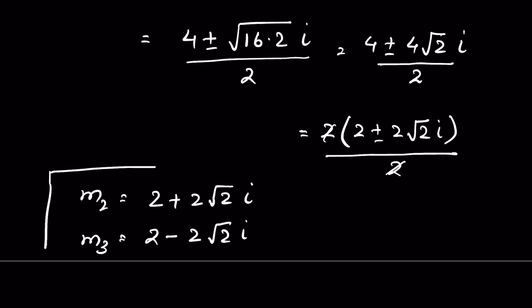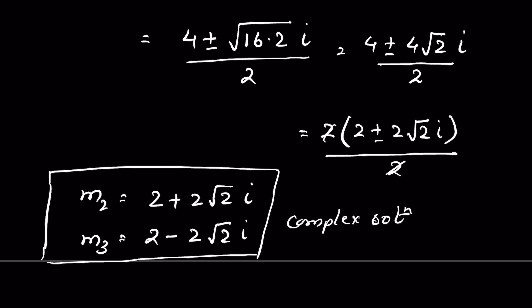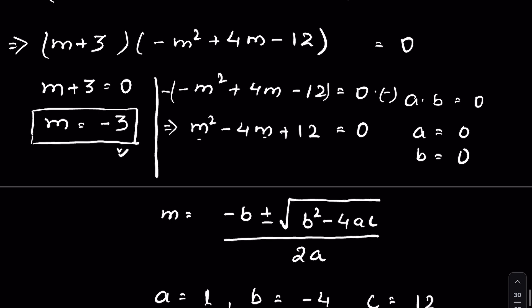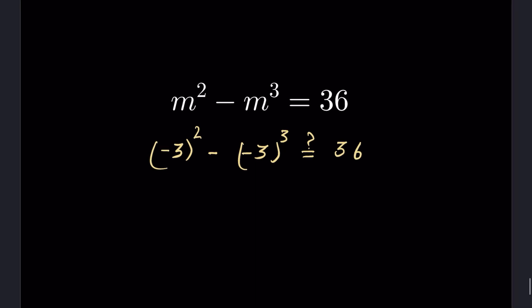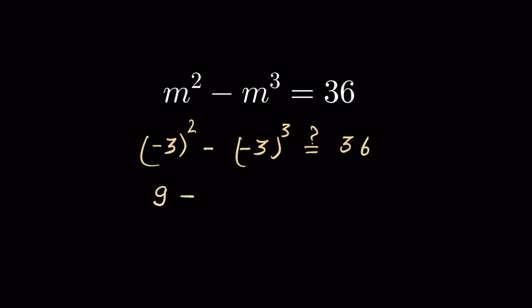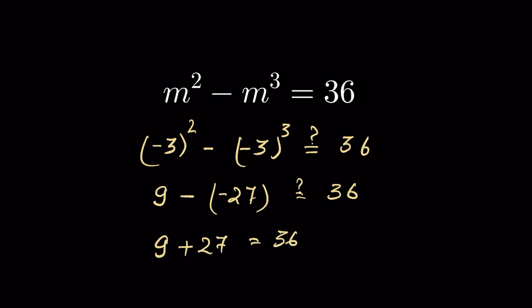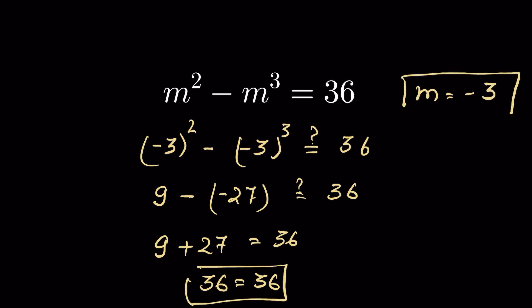These two values are complex numbers, so the only real solution is m equals minus 3. Let's verify: (minus 3) squared minus (minus 3) cubed equals 9 minus (minus 27), because the cube of a negative number with an odd exponent is negative. That gives 9 plus 27 equals 36, so LHS equals RHS. Therefore m equals minus 3 is confirmed as the solution.